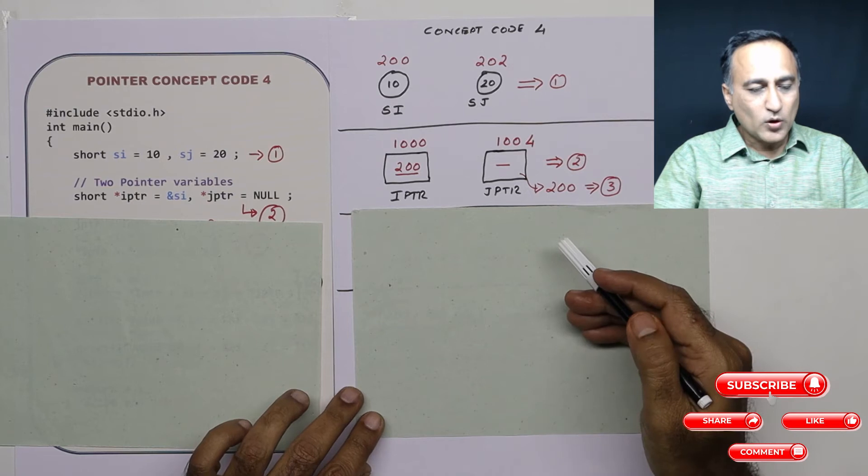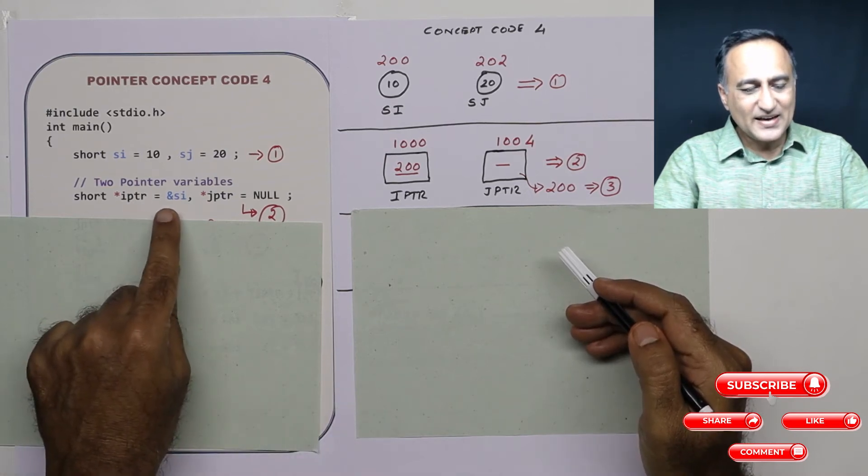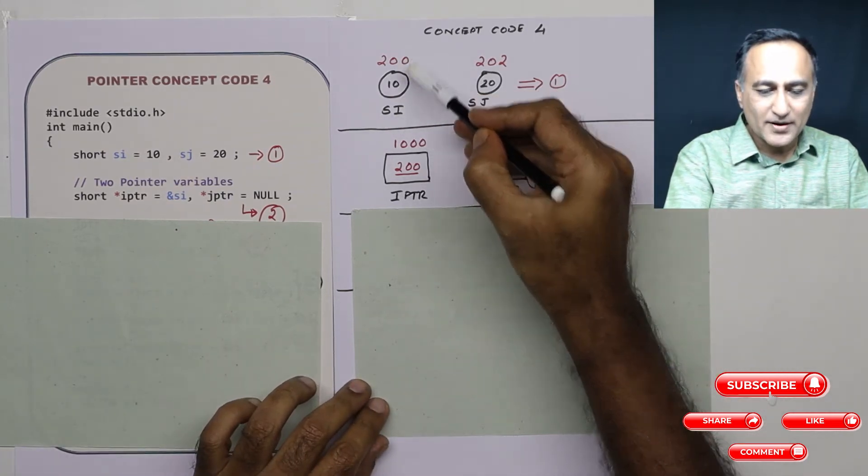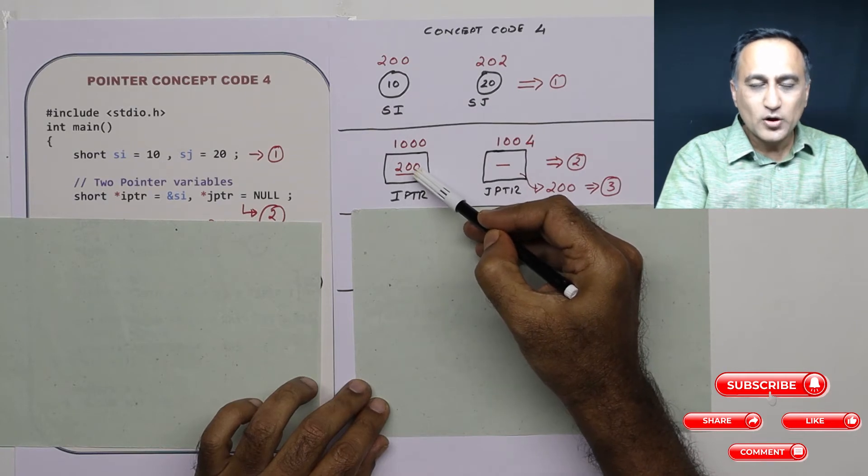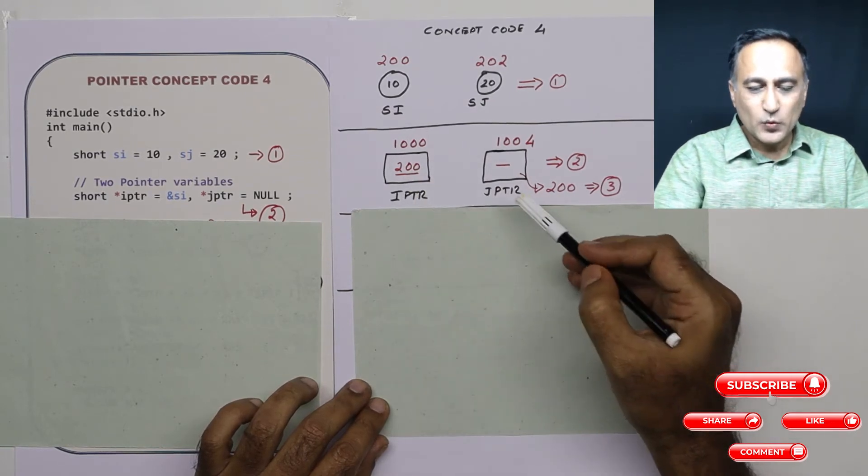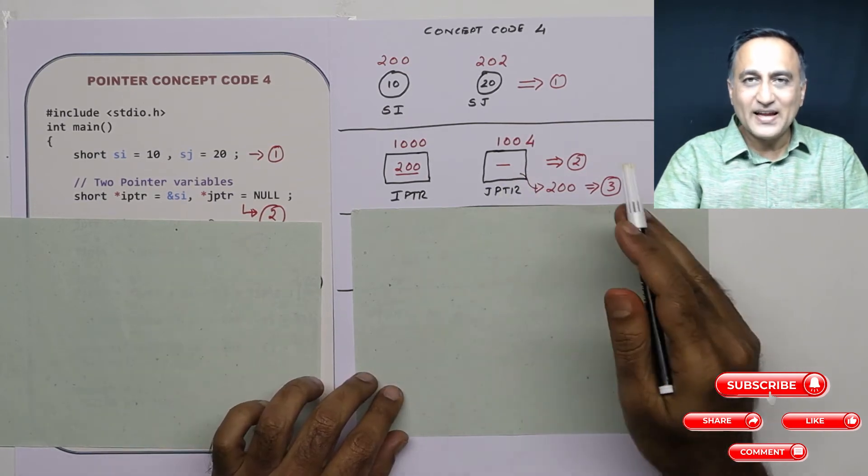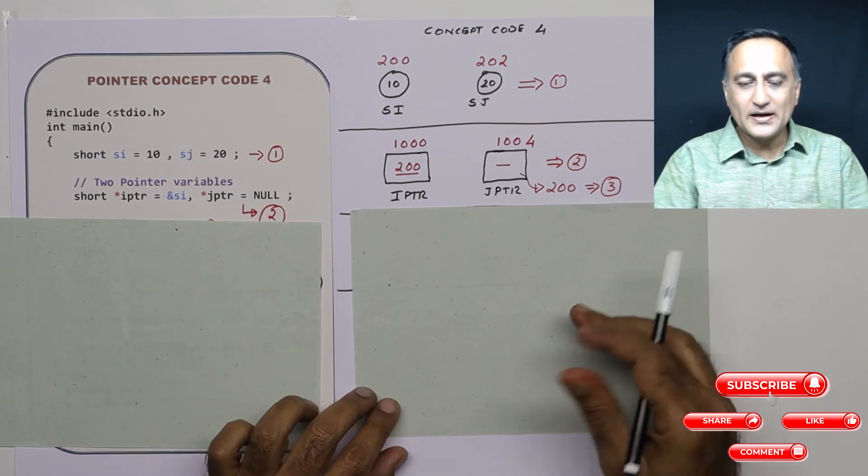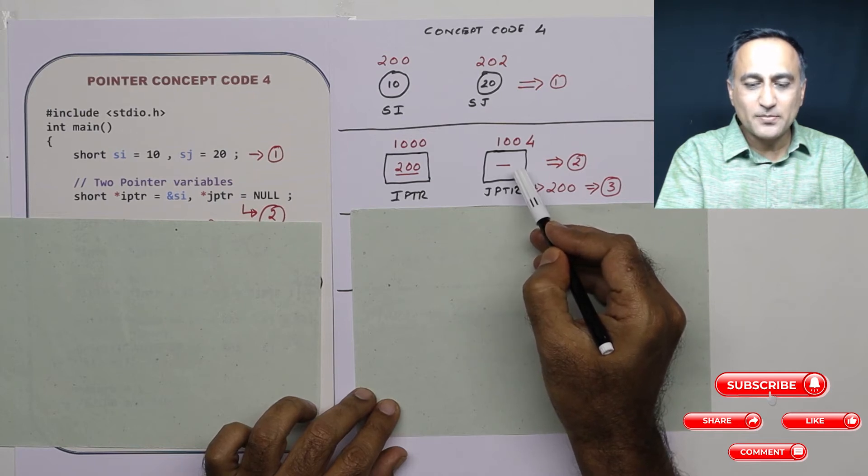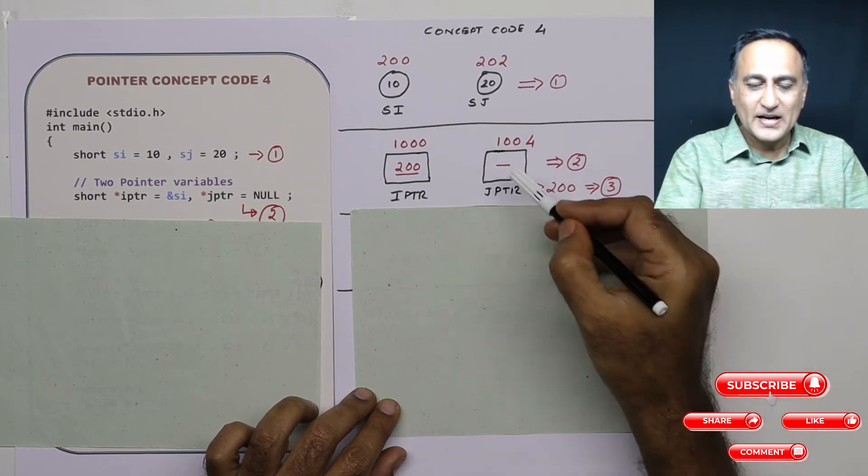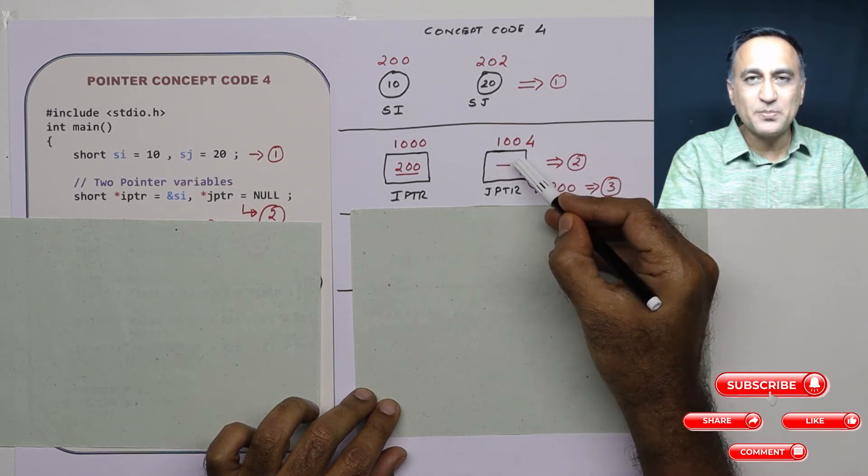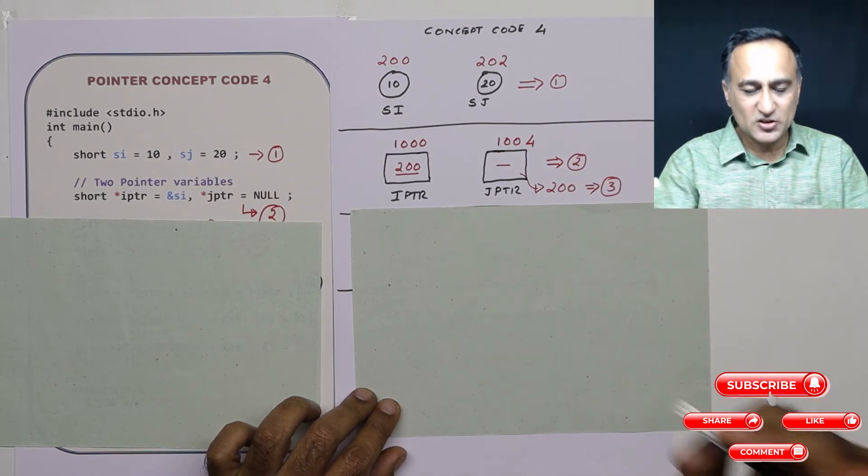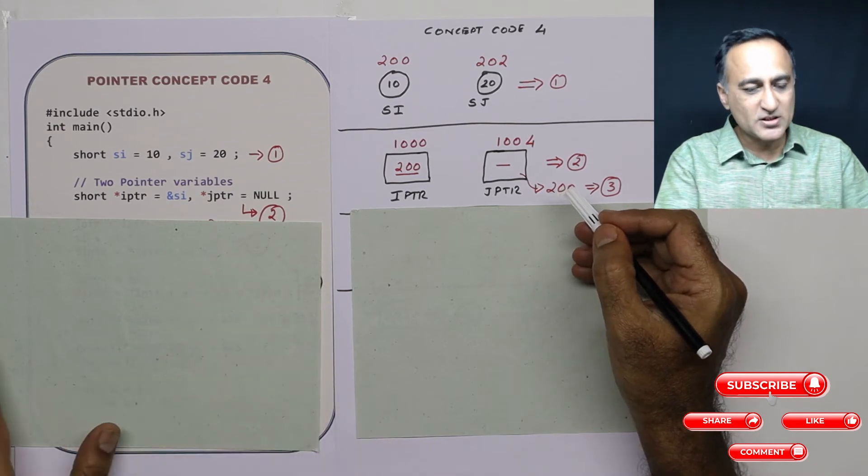Now what I am doing is I am assigning the address of si to IPTR. So what is the address of si? It is 200. So 200 is the value contained in IPTR. Whereas JPTR I have made it null in the sense it is not containing any address. It's a good practice to make it not refer to any address because otherwise by default a random number or a random address will get assigned to JPTR. And it may cause problems when you're trying to do certain pointer manipulations at the later stage. So this is step number two.